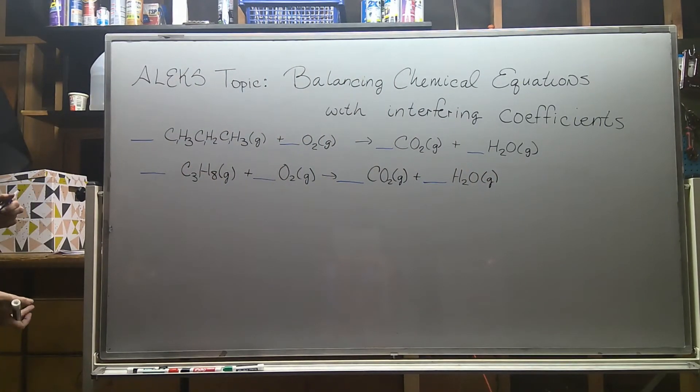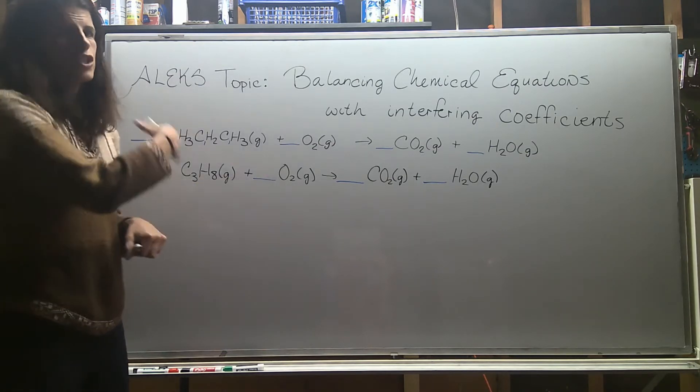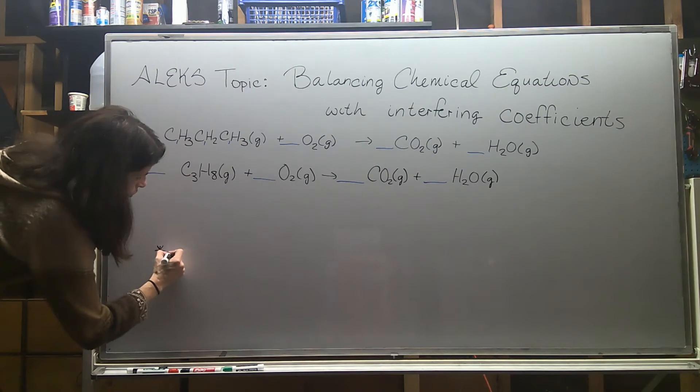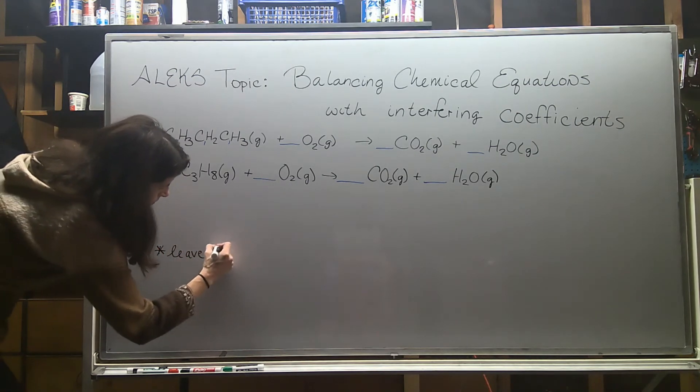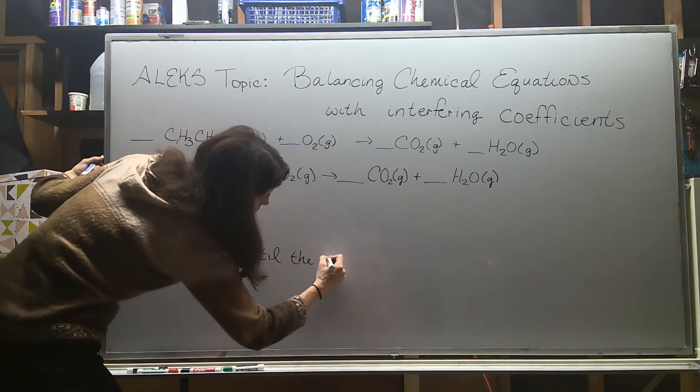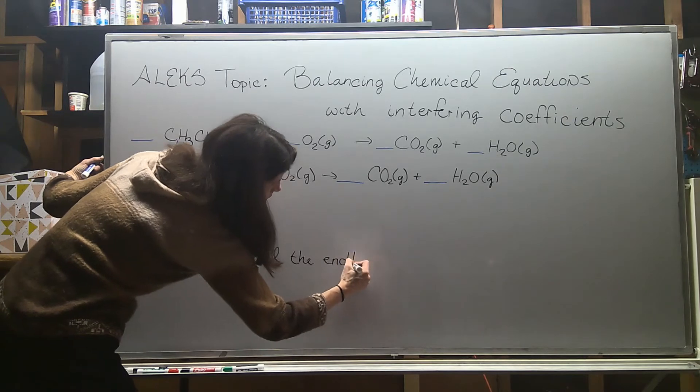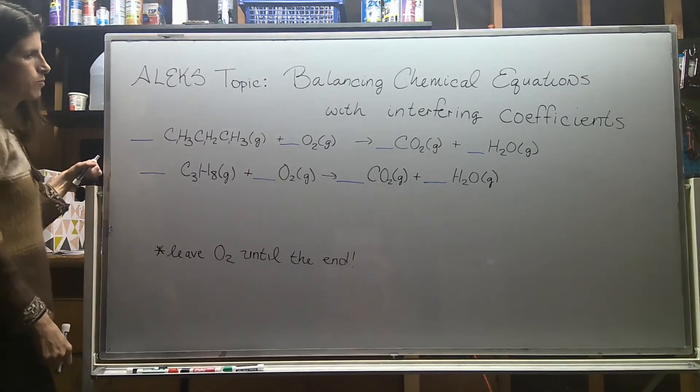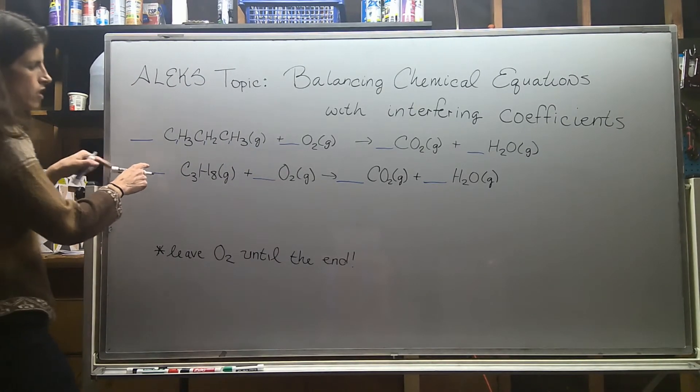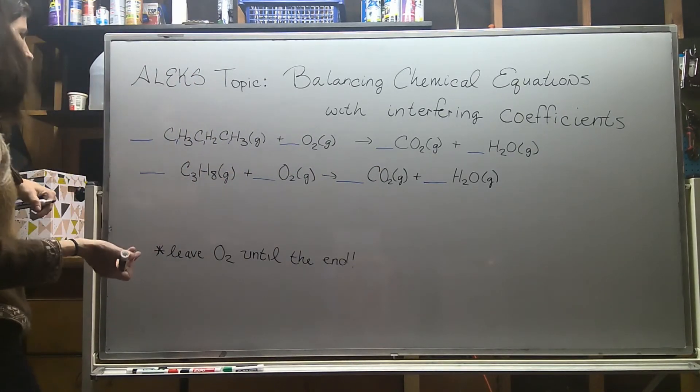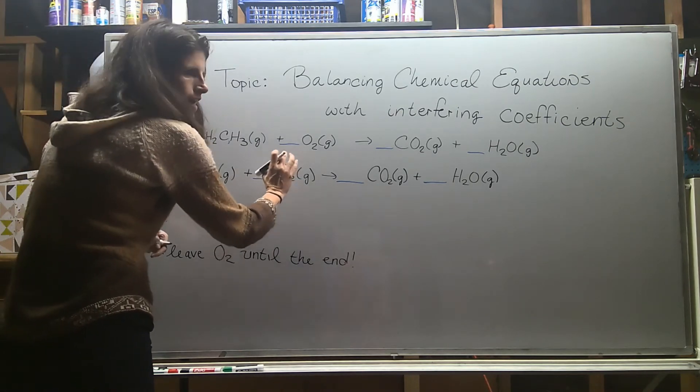At this point I want to start balancing my carbons. My big tip here: this is a combustion reaction, so when I go to balance combustion reactions I always leave oxygen to last. The reason why I do this is because I know that if I put a coefficient out here it's not going to mess up the rest of my work. However, if I change any of the other coefficients, it's going to impact more than one atom or more than one element. So I want to keep this O2 to the end. That's going to be the last coefficient I put in once I figure out everything else.